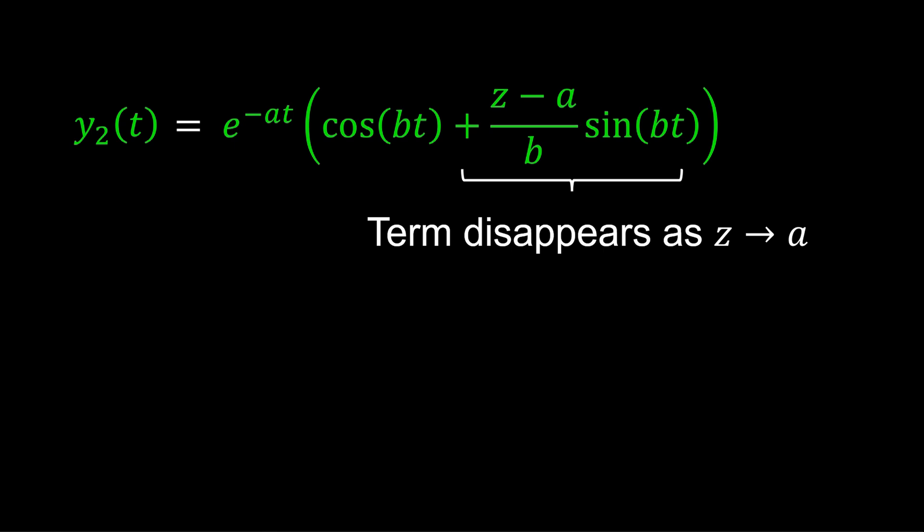Specifically, as Z approaches the real part of P, where the pole is at minus P, that term disappears.